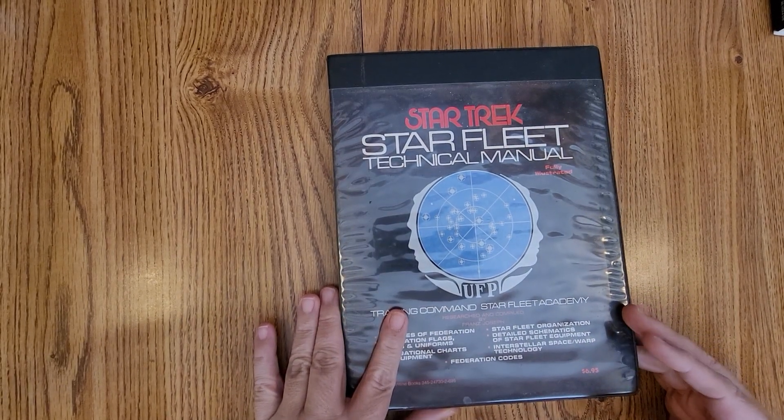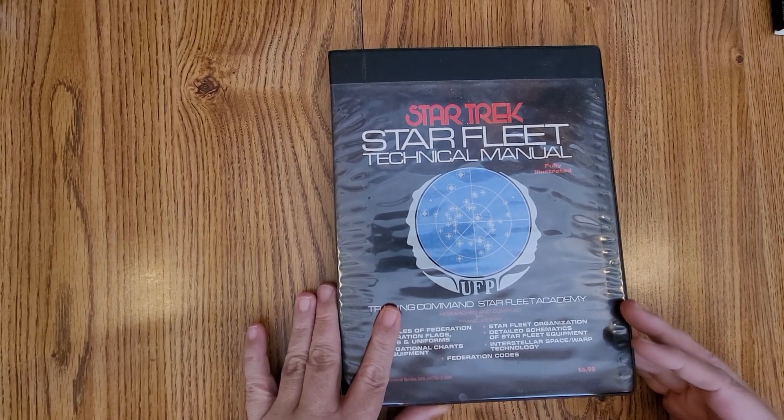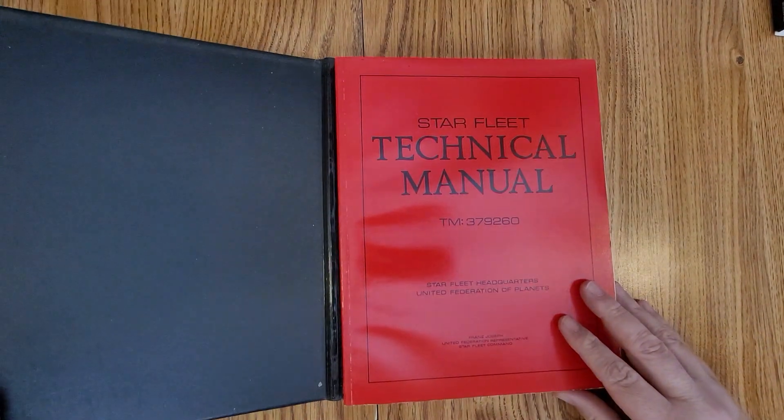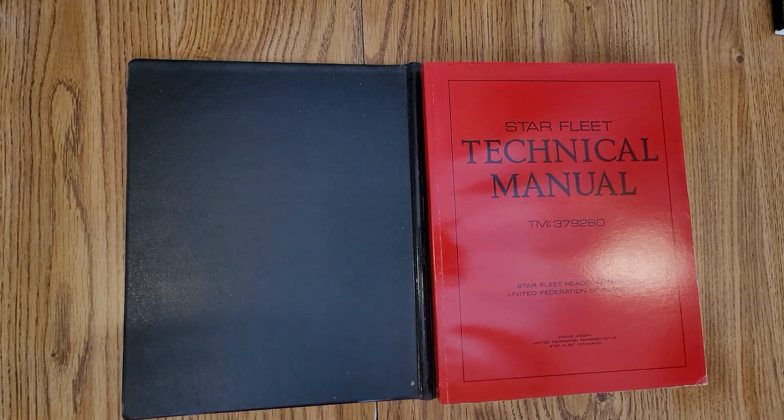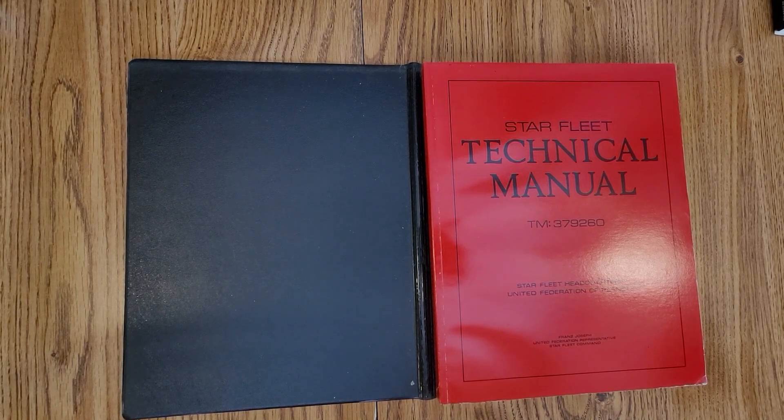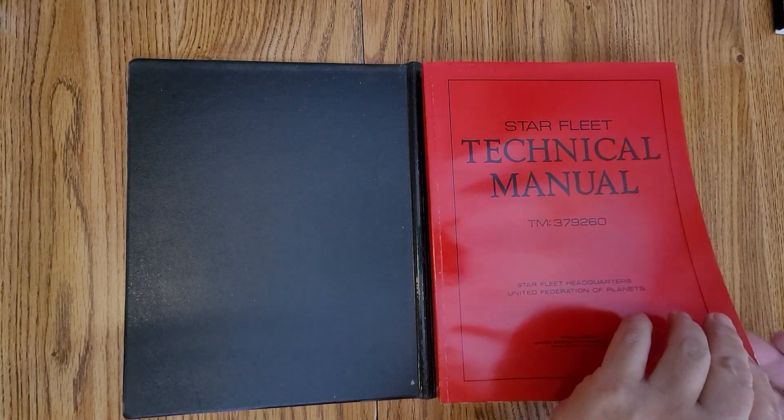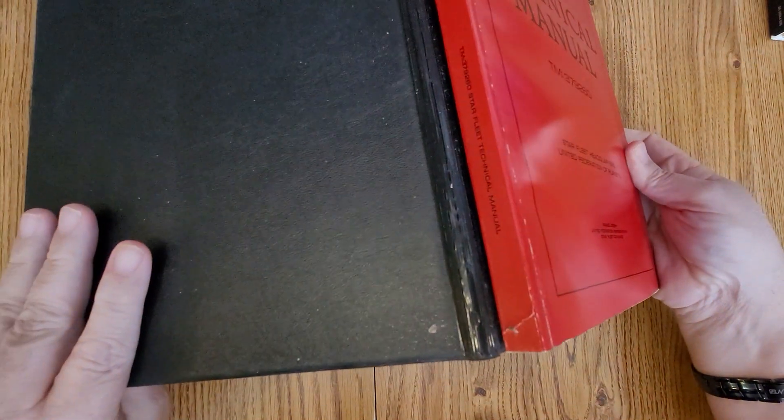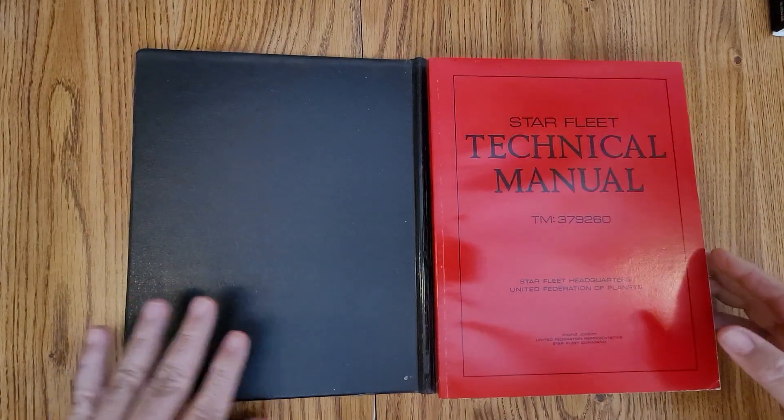The original manual was kind of neat from the standpoint that instead of just being a paperback, this one actually had a binder on the outside. So you can see it's like an old school binder, like the material, the old three ring binders. And then here's the Starfleet technical manual.